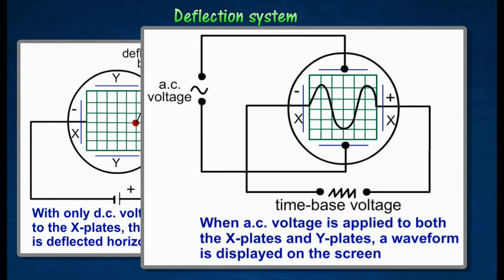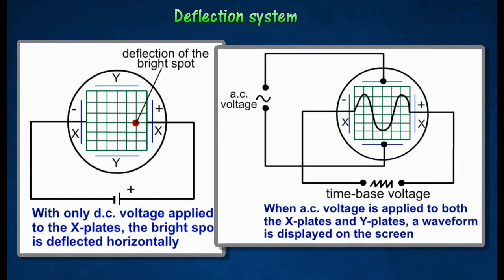When alternating current voltage is applied to both the X plates and the Y plates, the light spot will be oscillated vertically and horizontally as shown on the diagram.